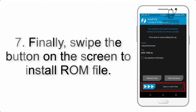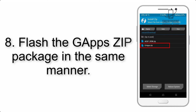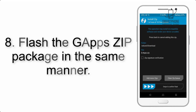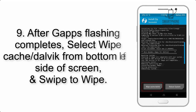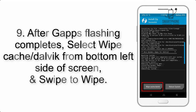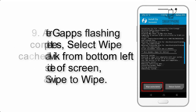Step 6: Navigate to the storage and select the ROM zip file. Step 7: Swipe the button on the screen to install the ROM file. Step 8: Flash the Gapps zip package in the same manner.